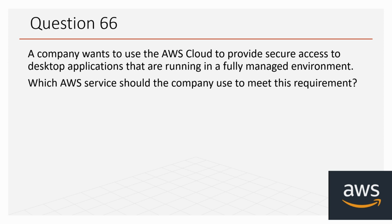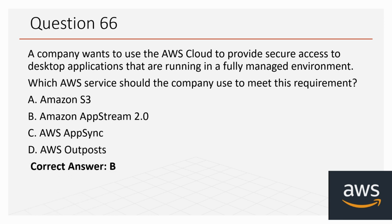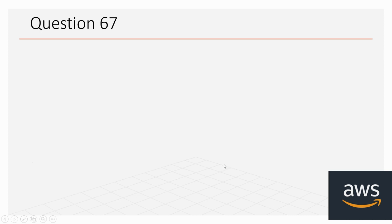Question 66: A company wants to use the AWS Cloud to provide secure access to desktop applications running in a fully managed environment. Which AWS service should the company use? Options: A: Amazon S3, B: Amazon AppStream 2.0, C: AWS AppSync, D: AWS Outposts. The correct option is B, Amazon AppStream 2.0.